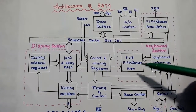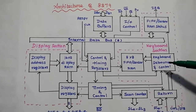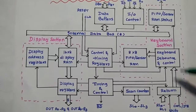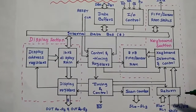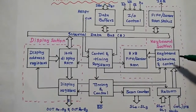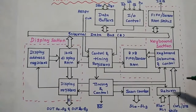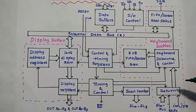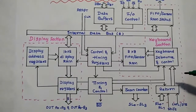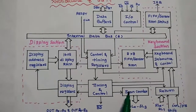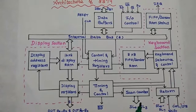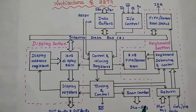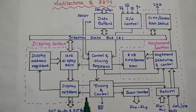The keyboard debounce and control unit is mainly used to scan the return lines for identifying key closure. After getting the control from the return lines, it can activate the control keys as well as shift keys. Next is the scan counter — it is a 4-bit scan counter used to provide the binary count to the display unit.